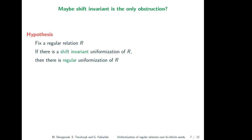Let's make this hypothesis more formal. We fix some regular relation r and ask: does r admit a shift-invariant uniformization if and only if it admits a regular uniformization? Interestingly, this hypothesis is false. There exist relations which do not admit a regular uniformization, but which do have a shift-invariant uniformization. So non-regularity must come from different reasons than just being incompatible with shifts.